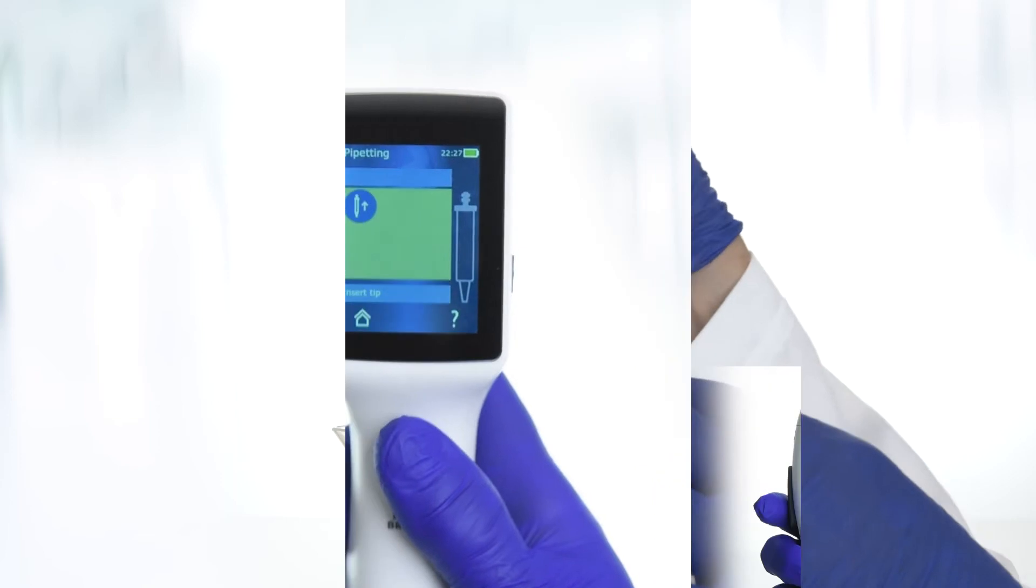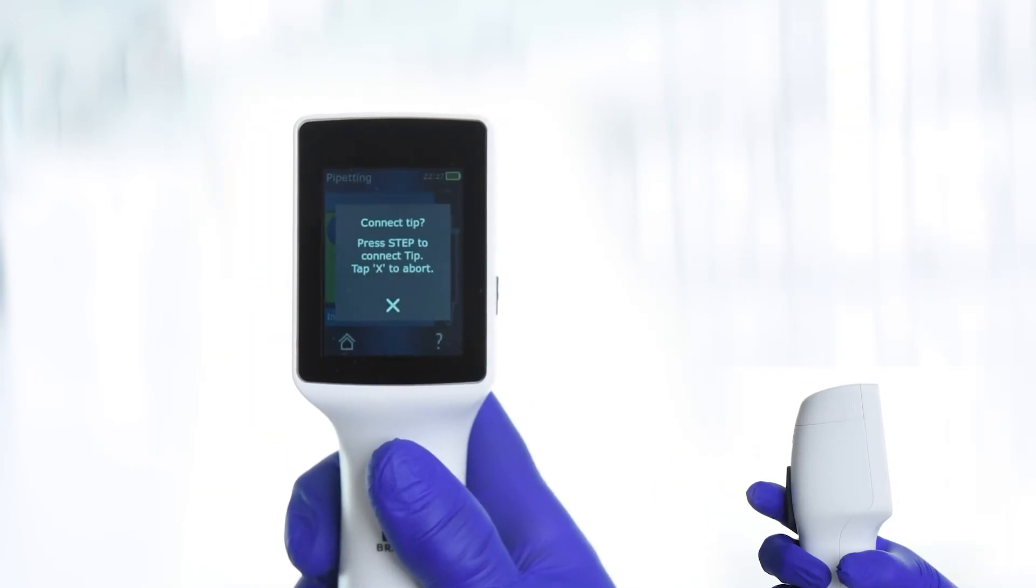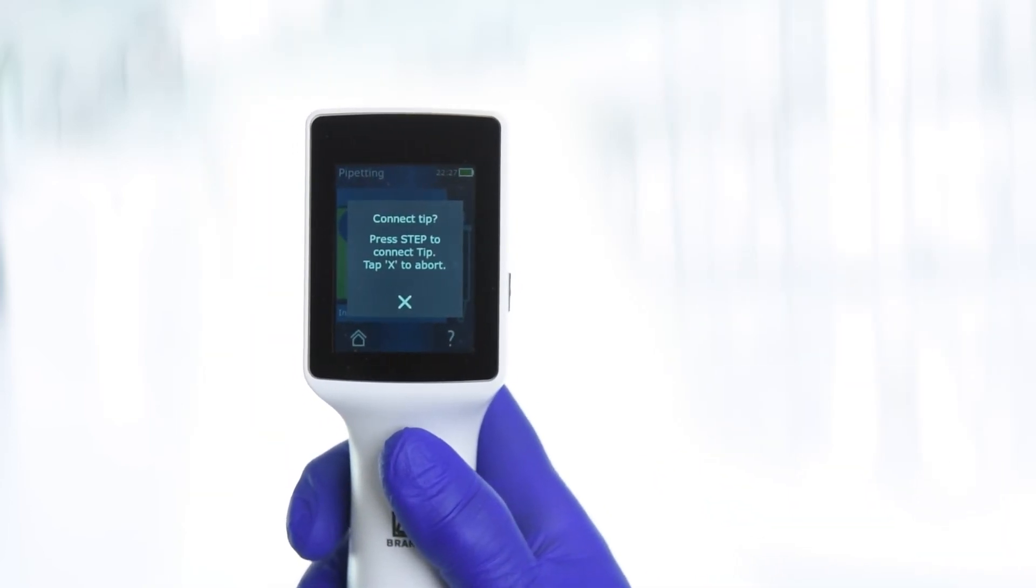Insert a PDTip 2 and press the Step key to confirm. The PDTip volume is automatically recognized.